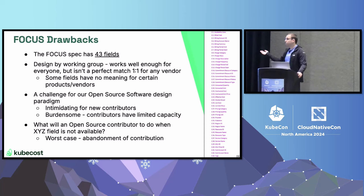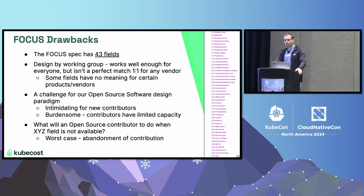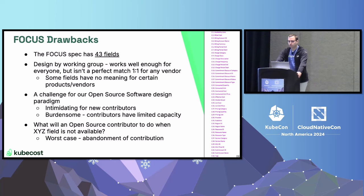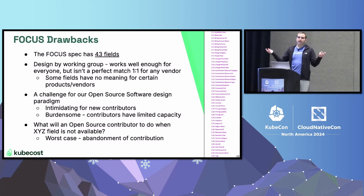It's not perfect. There are 43 FOCUS fields, and it's a pretty typical product of design by a working group — it works well enough for everybody, but it's not specific to any one vendor, so they have to take the superset of all the fields. This presents a challenge in our paradigm: we're asking people as acts of professional service to implement these fields. We want to make this as unintimidating and easy as possible. What we're specifically trying to avoid is someone saying 'sure, I'll write a plugin,' then getting halfway down the list and saying 'I don't have a cost for commitment discount ID' and abandoning it. That is a categorical failure on the designer's part.